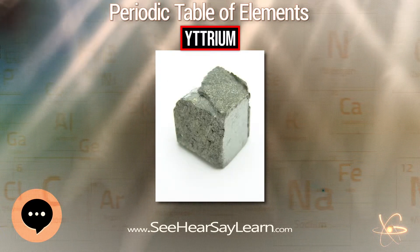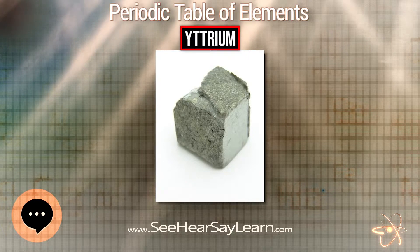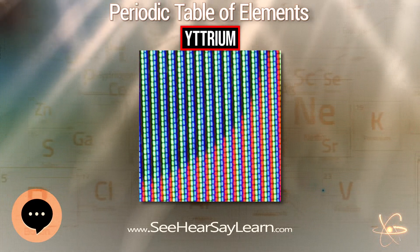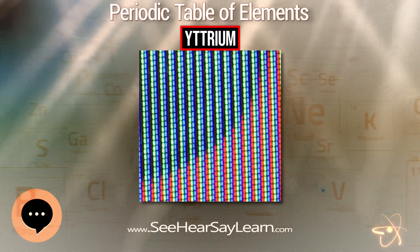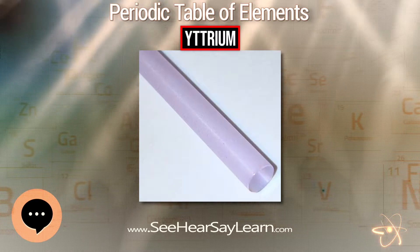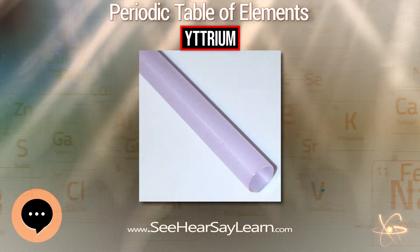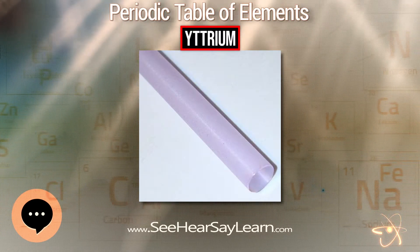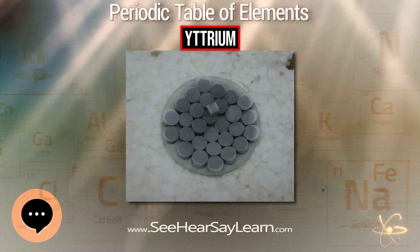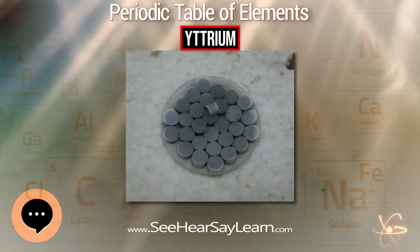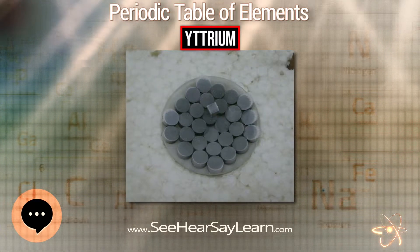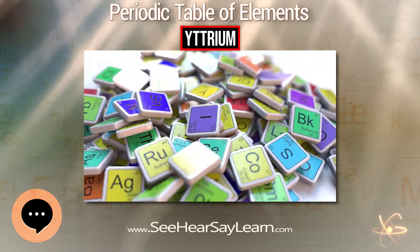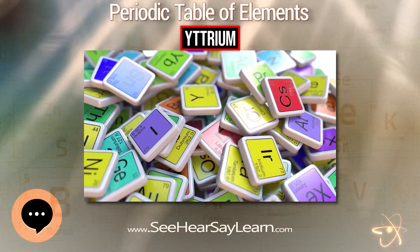Yttrium has at least 20 metastable isomers ranging in mass number from 78 to 102; multiple excitation states have been observed for ⁸⁰Y and ⁹⁷Y. While most isomers are expected to be less stable than their ground states, ⁷⁸ᵐY, ⁸⁴ᵐY, ⁸⁵ᵐY, ⁹⁶ᵐY, ⁹⁸ᵐ¹Y, ¹⁰⁰ᵐY, and ¹⁰²ᵐY have longer half-lives than their ground states, as these isomers decay by beta decay rather than isomeric transition.